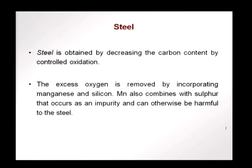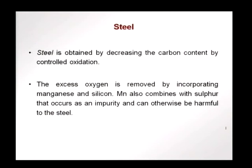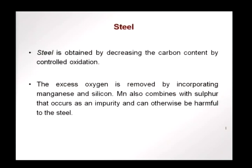Steel is something that we use more. Steel is obtained by decreasing the carbon content. By controlled oxidation, we burn off the carbon, so the carbon content decreases and we do not have the problems seen in cast iron. Excess oxygen is removed by incorporating manganese and silicon. Manganese also combines with sulphur that could be present as an impurity, which can be harmful to the steel. You will see that when we talk about chemical composition, we always have upper limits on the amount of sulphur present in steel.